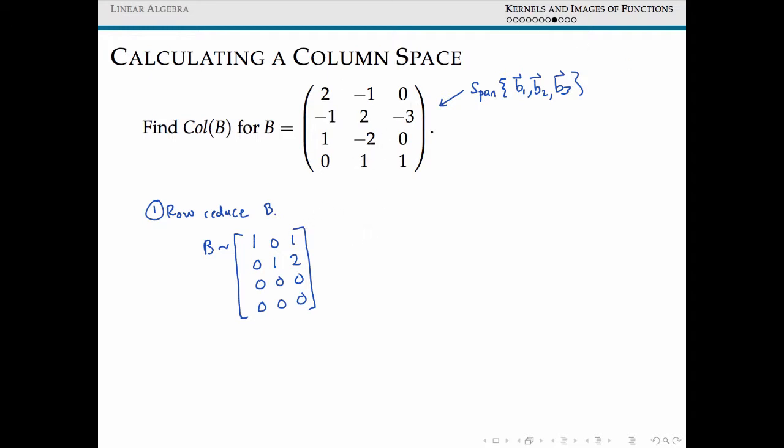As reading off from this directly, we can see that the third column can be written as one copy of our first column. So we'll call this b1 and b2 and b3. From this third column, we can see that column b3 can be written as a sum of one copy of b1 plus two copies of b2.